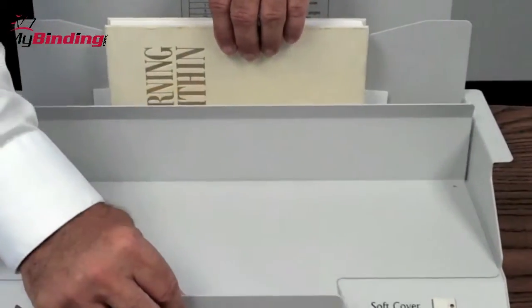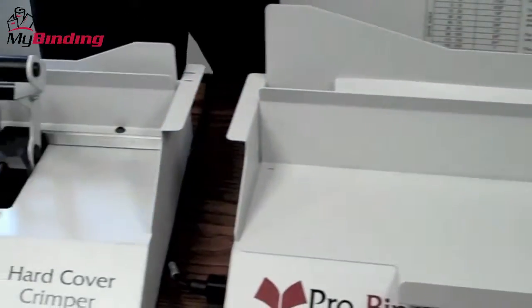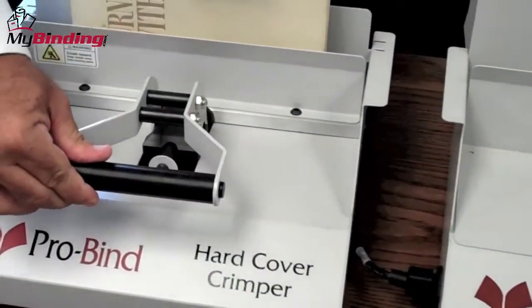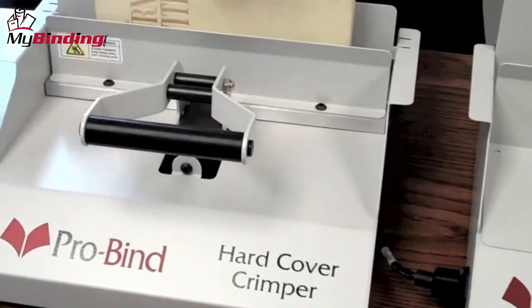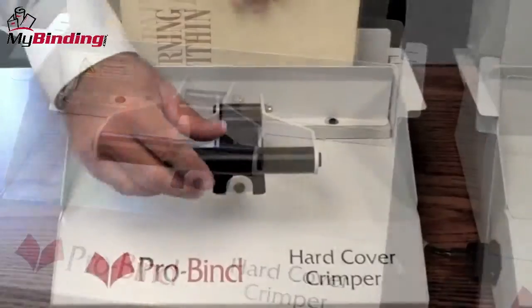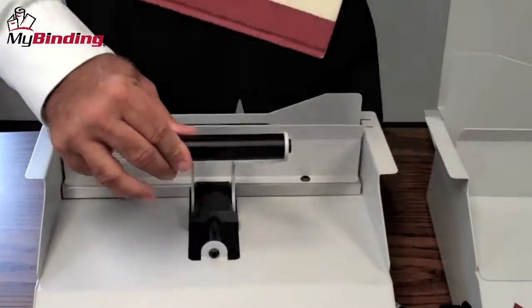Then slide the plate out, remove the book, and place it into the hardcover crimper. Allow the handle to spring back and hold the book there in place. And after the book has cooled, remove it from the ProBind crimper and the repair is finished.